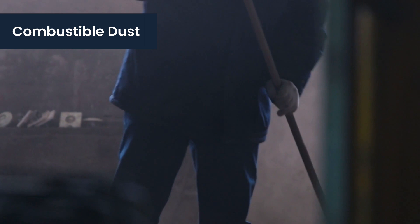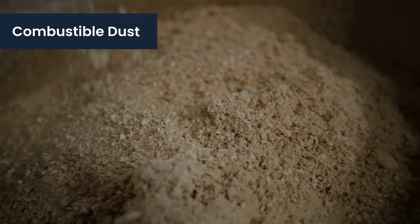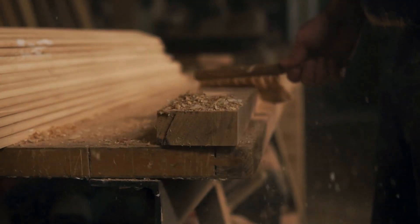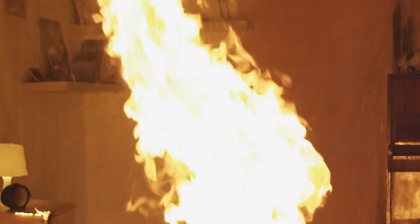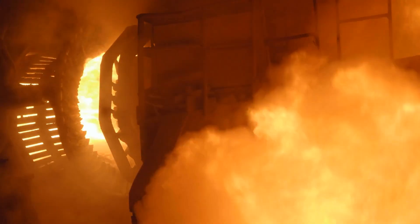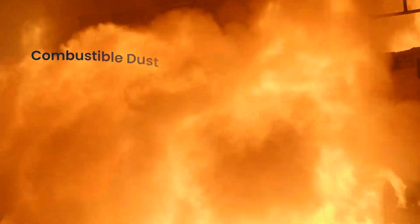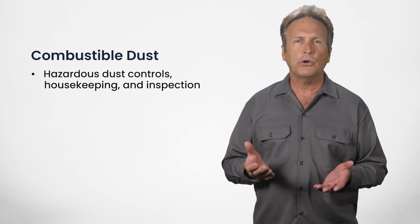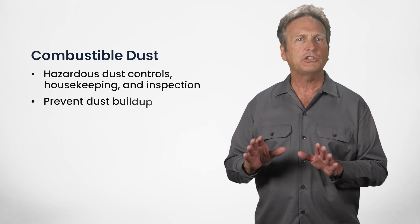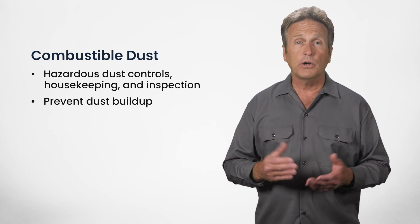Combustible dust is any combustible material that has been shaved, ground, or processed into fine particles, including wood, paper, textile fibers, sugar, flour, and even some metals. If your workplace processes create dust or use powders, you might face a combustible dust hazard. Combustible dust may accumulate on surfaces and equipment or become suspended in the air. These fine particles are often more combustible than their solid forms and can easily catch fire. When airborne, they even pose a risk of a dust explosion. To minimize the risk, implement a hazardous dust control, housekeeping, and inspection program to minimize dust generation and prevent buildup, and where appropriate, install a dust collection and filtration system to regularly remove airborne combustibles.